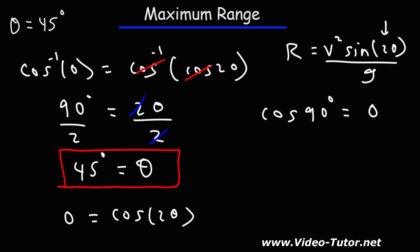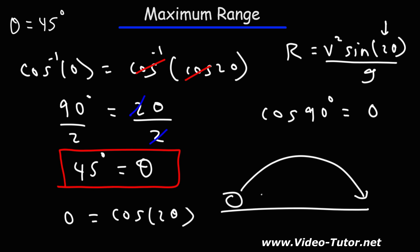So that's how you can show that at an angle of 45 degrees, for a leveled projectile motion problem where the ball leaves from ground level, the maximum range occurs at an angle of 45 degrees. Now you know the process of how to find that angle using calculus.